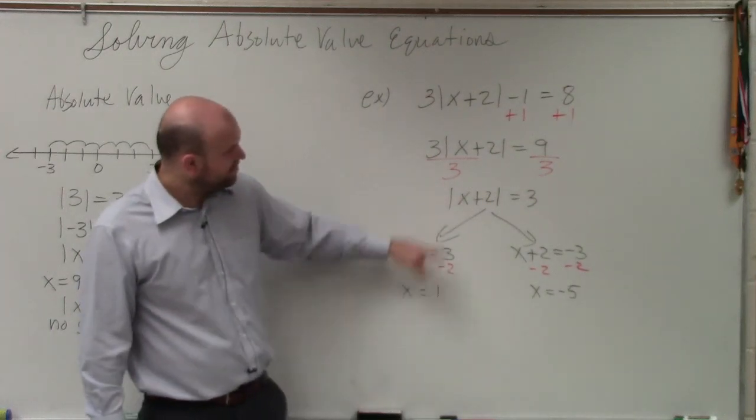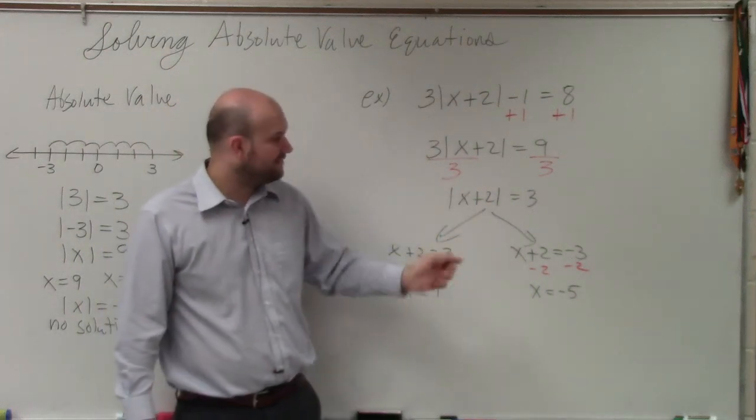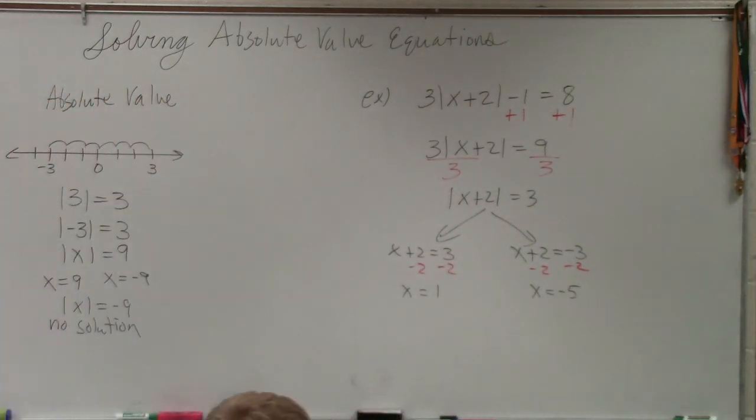So when we plug this in, plug in 1. 1 plus 2 is 3. Absolute value of 3 is 3. Negative 5 plus 2 is negative 3. Absolute value of negative 3 is 3. So both of them check out. Any questions so far? Are we bored yet?